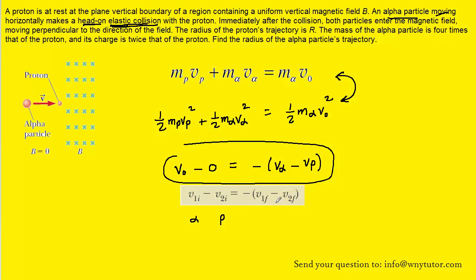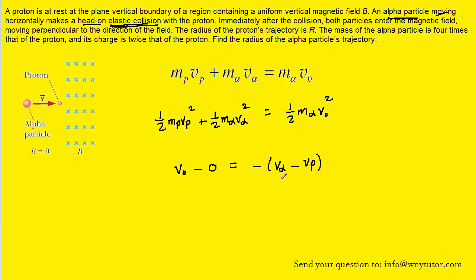We will solve this equation for the final velocity of the proton. Distributing the negative sign on the right-hand side gives negative V_alpha plus V_proton. Adding V_alpha to the other side allows us to solve for the final velocity of the proton.